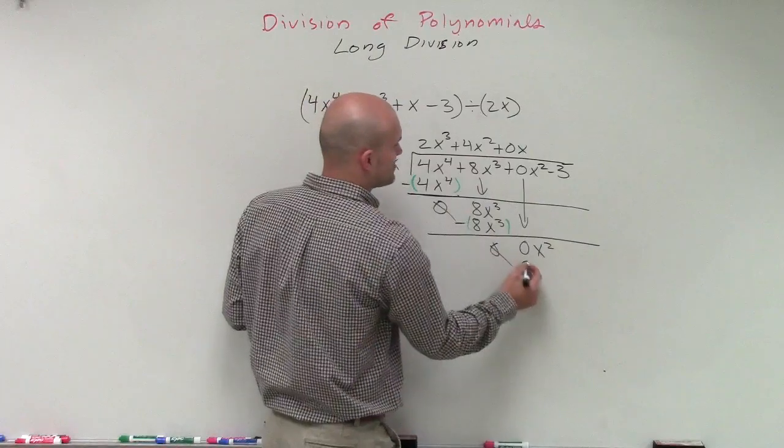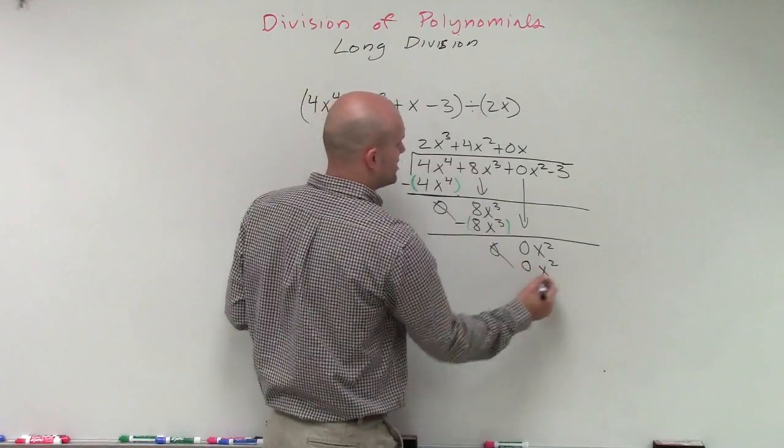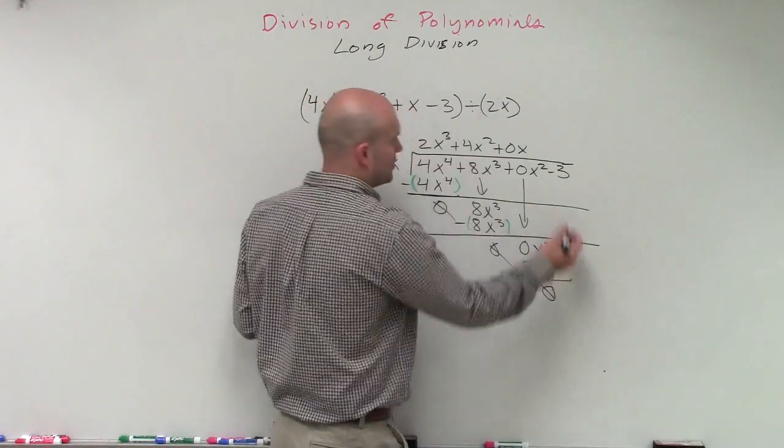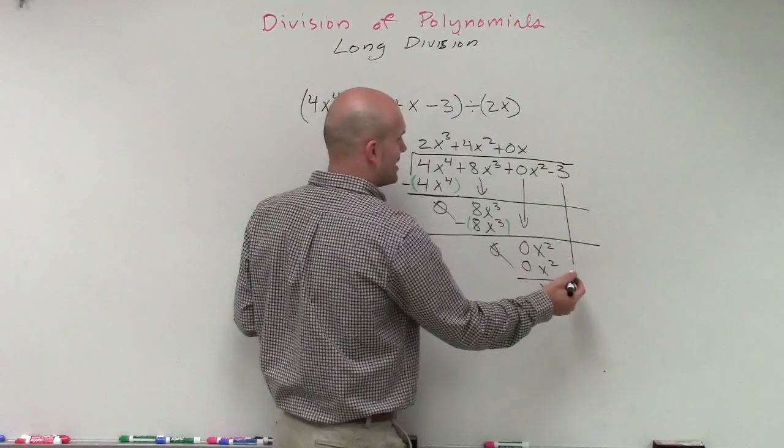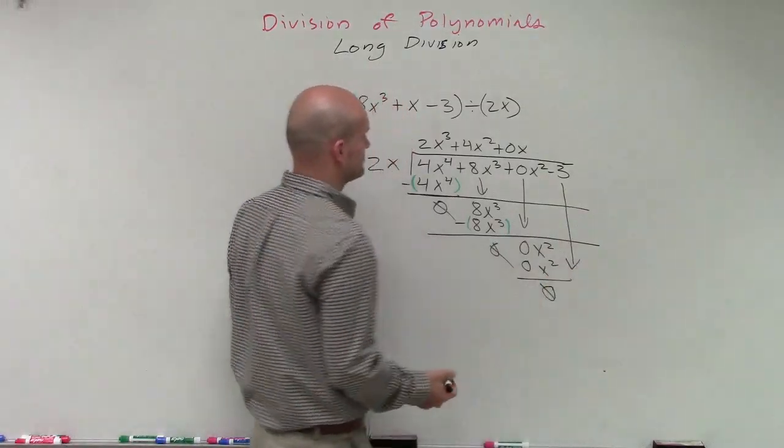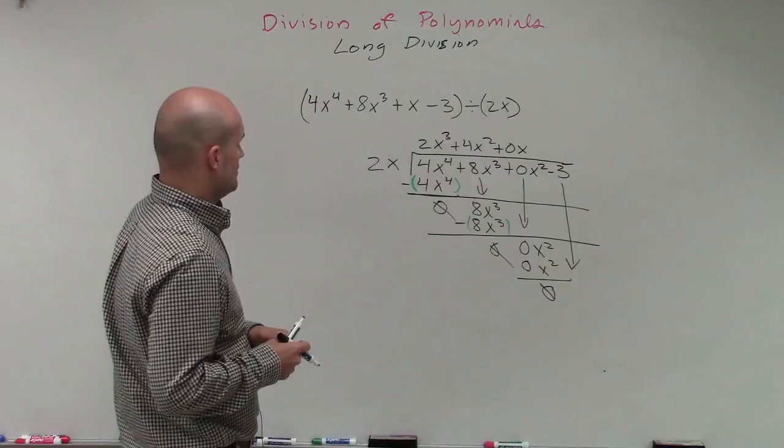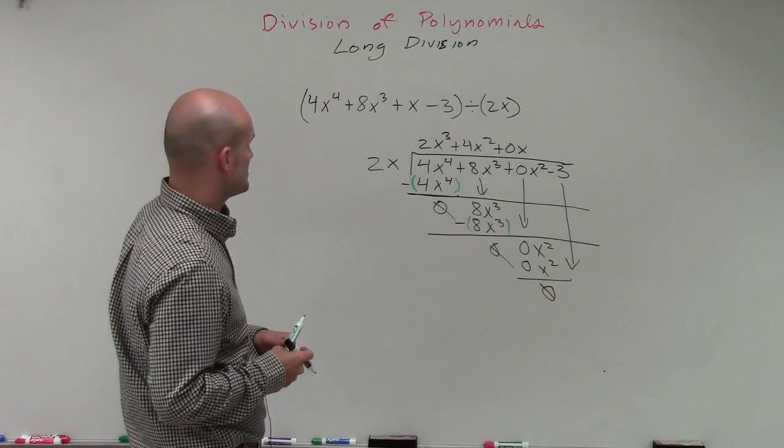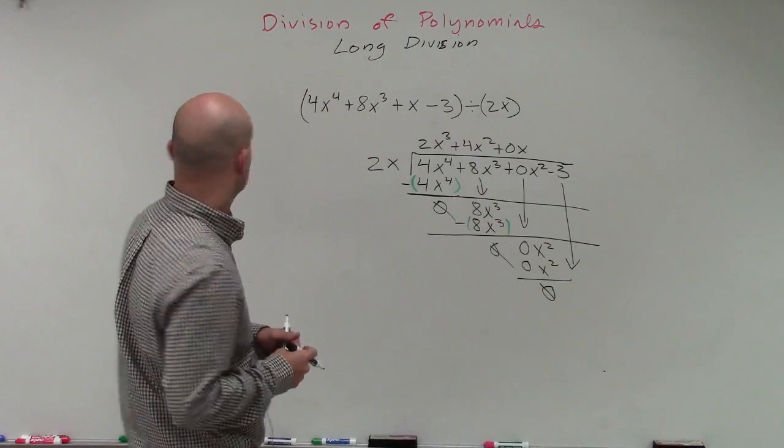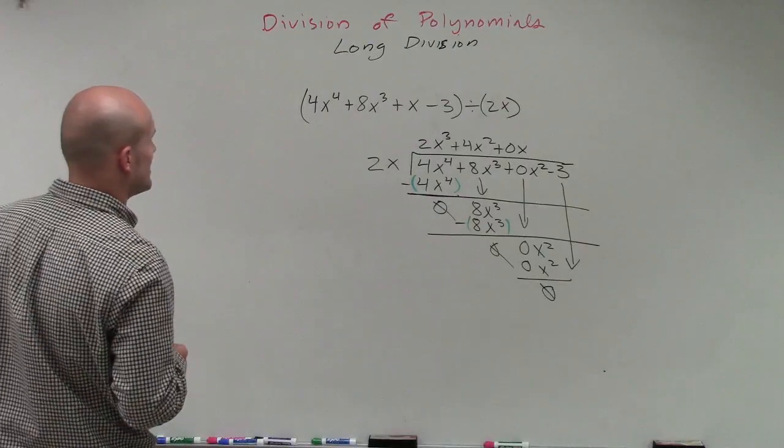So 0x times 2x has become 0x squared, which, of course, is 0. Then I bring down my next term. 0x times 0, 8x squared.